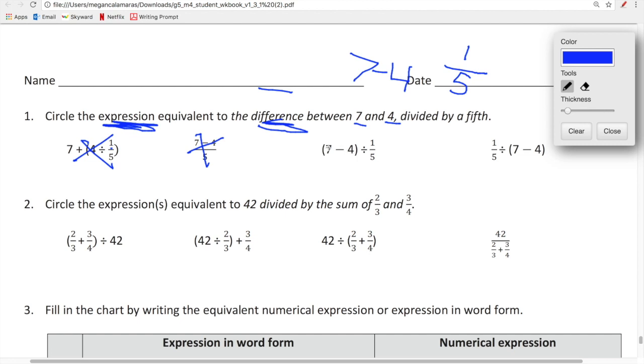So then this one is in parentheses seven minus four divided by one fifth. Which I think that that works because it's the difference. And the only thing is just putting the seven and the four in parentheses. And we know that parentheses don't change anything. So this expression is equivalent to the difference between seven and four divided by a fifth. Yay!